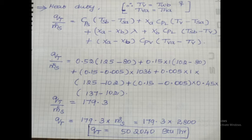TVA equals THA — that is the hot air outlet temperature, which is a calculated value of 137 degrees Fahrenheit. TVA also equals TWB. Substituting all values, we find QT divided by M-dot-S equals 179.3. M-dot-S is the given mass flow rate of solids, so multiplying by M-dot-S, we finally get QT equal to 502,040 BTU per hour. This is the heat duty value.